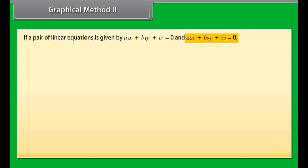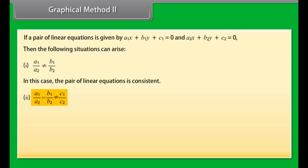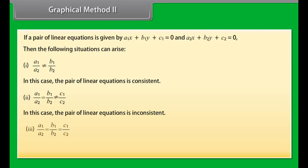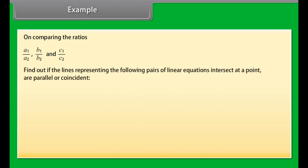Graphical Method continued. If a pair of linear equations is given by A1X + B1Y + C1 = 0 and A2X + B2Y + C2 = 0, then: (1) if A1/A2 ≠ B1/B2, the pair is consistent; (2) if A1/A2 = B1/B2 ≠ C1/C2, the pair is inconsistent; (3) if A1/A2 = B1/B2 = C1/C2, the pair is dependent and consistent.